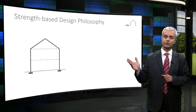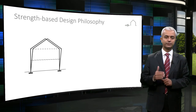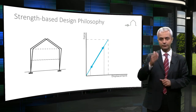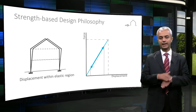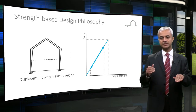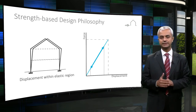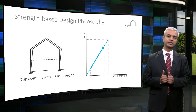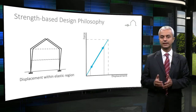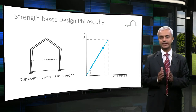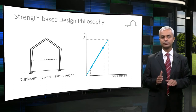This next graph shows the response of the structure in the elastic range in terms of a force-displacement diagram. The vertical axis represents the force, which is generally base shear, and the horizontal axis shows the displacement, which is generally top displacement. At any time, the structure can return back to its original position when it is unloaded. In this case, we say that the structure responds in an elastic manner, which means that no permanent deformations are observed.